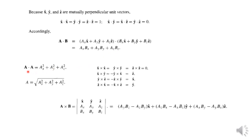The result is A·B = ax·bx + ay·by + az·bz. When both are the same vector — that is, A·A — it becomes ax² + ay² + az², which equals |A|². So the magnitude of vector A is the square root of ax² + ay² + az², the square root of the sum of squares of the components.